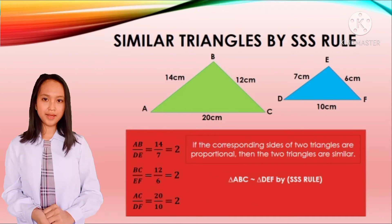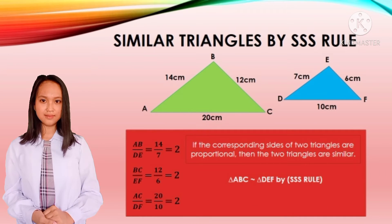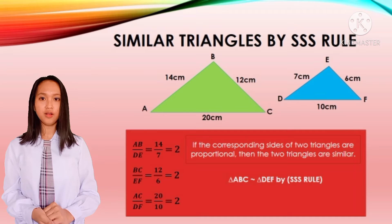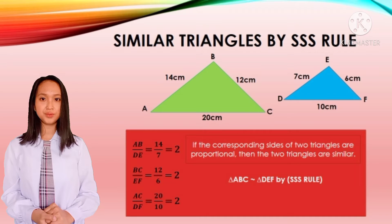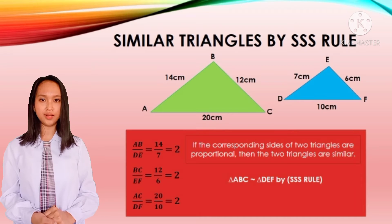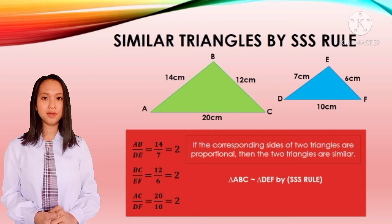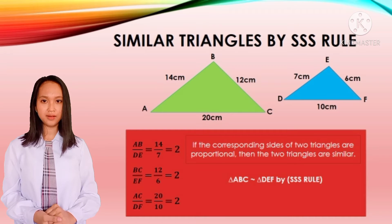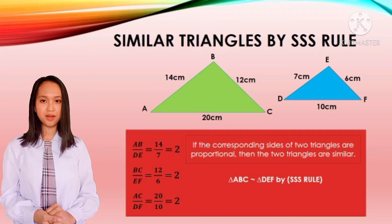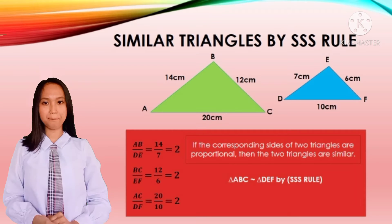Similar triangles by SSS rule: if all of the corresponding sides of these two triangles are proportional and the ratios of all matching sides are the same value, therefore these triangles are similar by SSS rule.